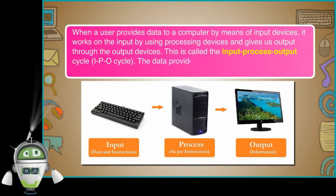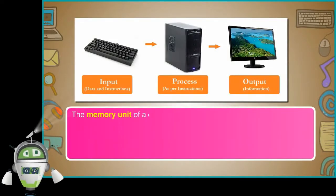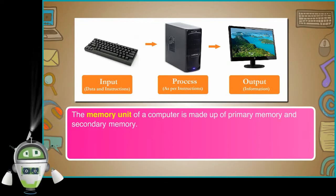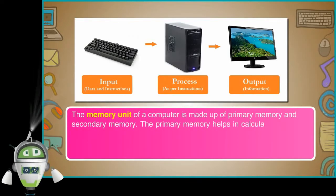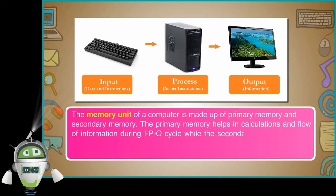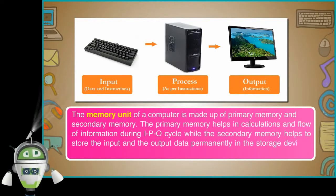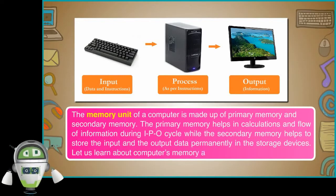The data provided to the computer are stored inside the memory. The memory unit of a computer is made up of primary memory and secondary memory. The primary memory helps in calculations and flow of information during the IPO cycle, while the secondary memory helps to store the input and the output data permanently in the storage devices. Let us learn about computer memory and storage devices.